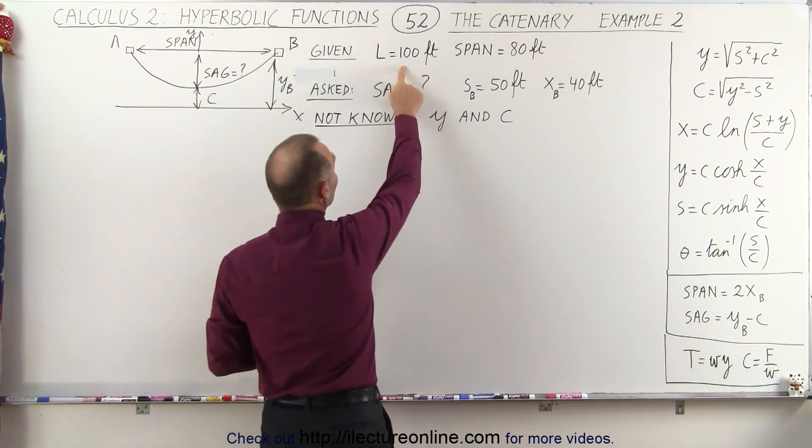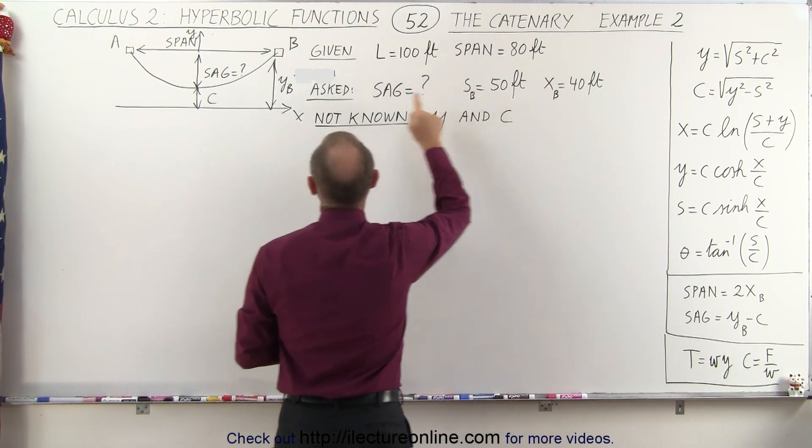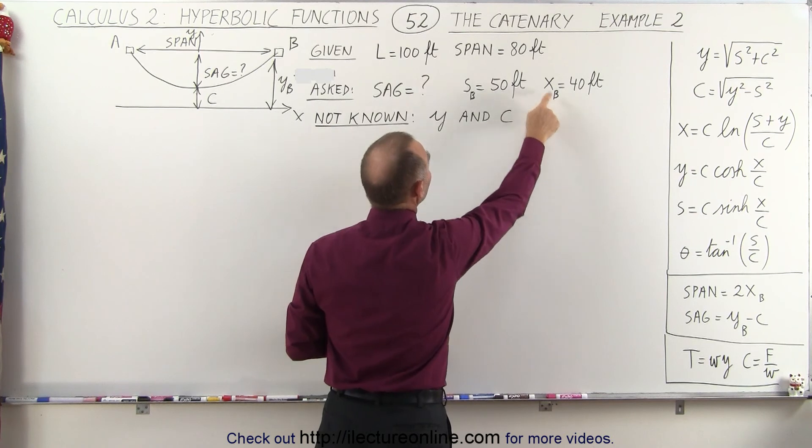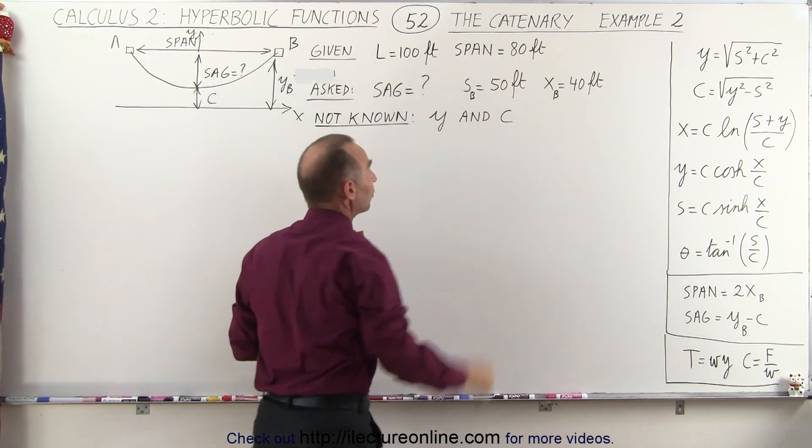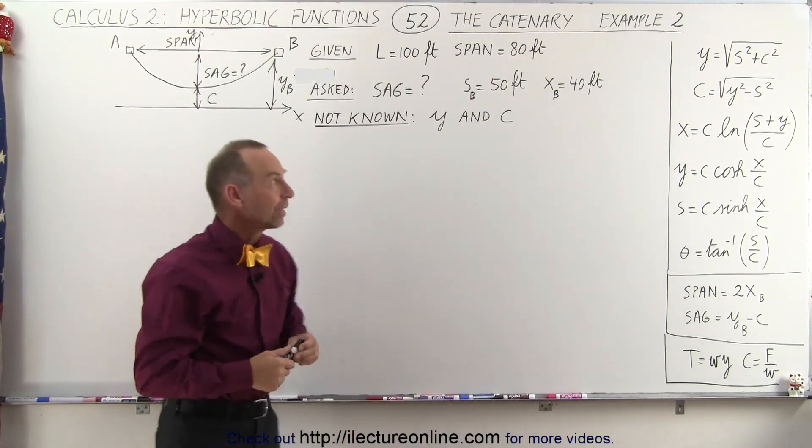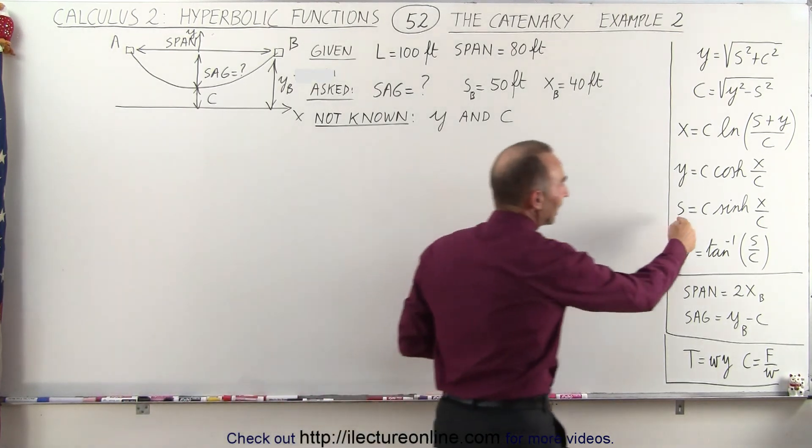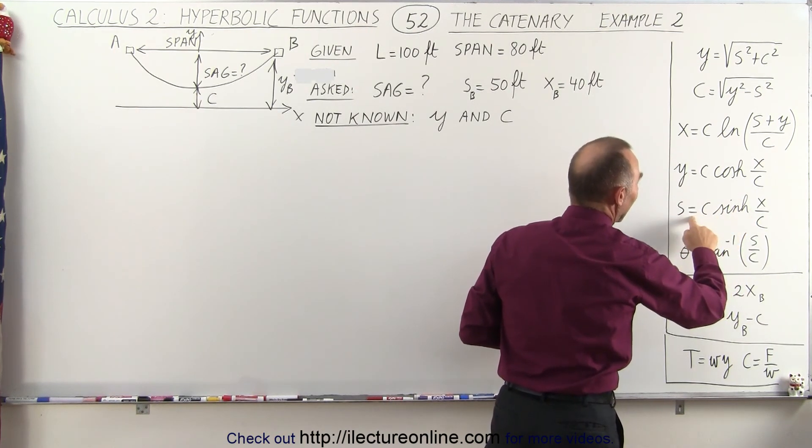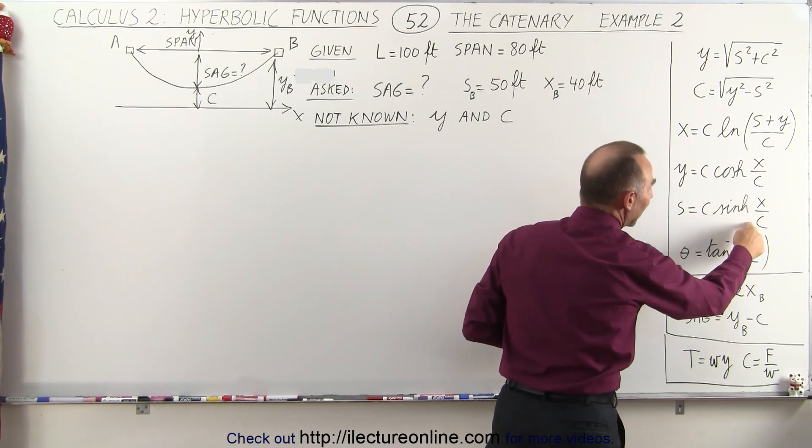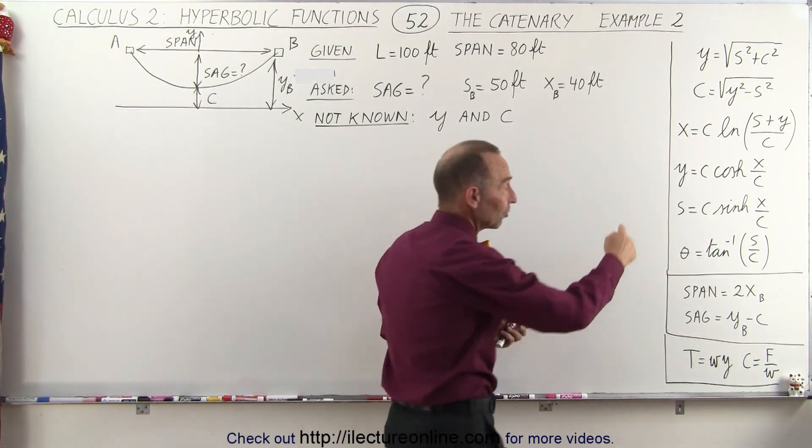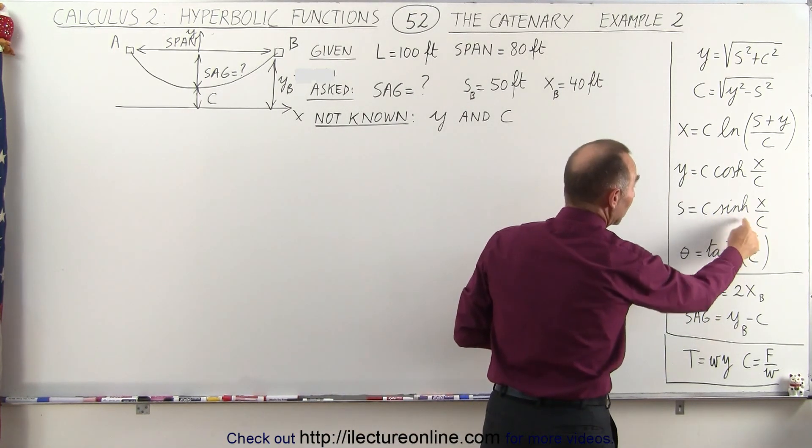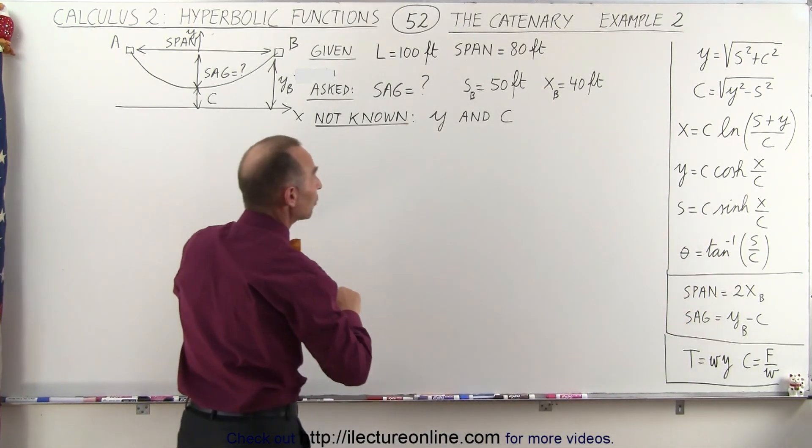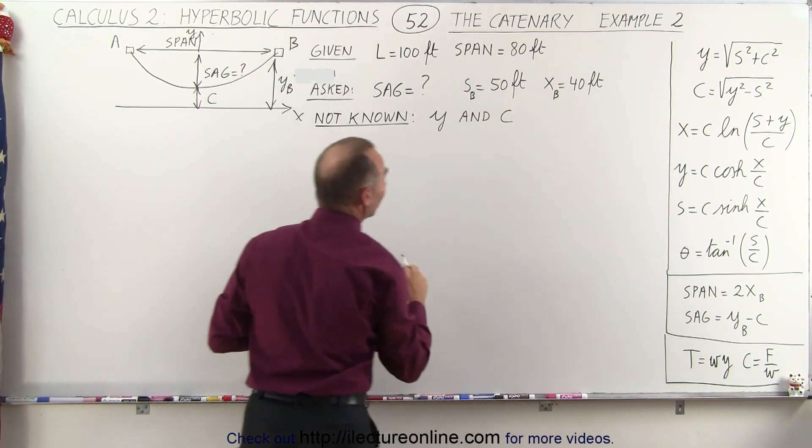Well since we know that the length is 100 feet then we know that the length of the cable from the bottom of the cable to one of the supports is 50 feet and x will be 40 feet if the span is 80 feet. We simply divide those two numbers by 2 to get s sub b and x sub b. What we're going to do now is we're going to take this equation right here. We're going to calculate the value for s for different values of c. We don't know the value for c and notice in this equation right here there's two places where we need to put c so we cannot just solve that equation for c.